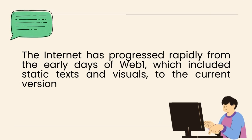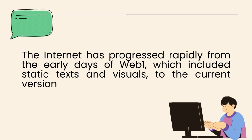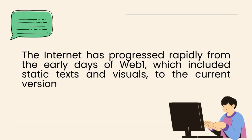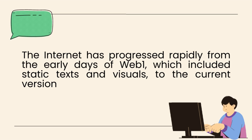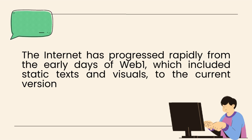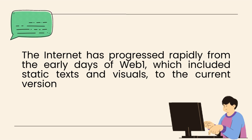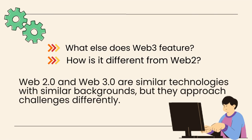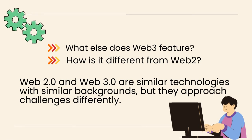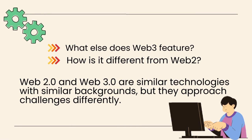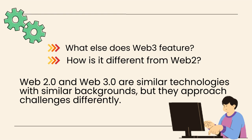The Internet has progressed rapidly from the early days of Web 1, which included static texts and visuals, to the current version, which is Web 2.0. We are presently entering the Web 3.0 era, in which value and data will easily move across decentralized platforms with distributed ownership and control. But what else does Web 3.0 feature? How is it different from Web 2? Web 2.0 and Web 3.0 are similar technologies with similar backgrounds, but they approach challenges differently.